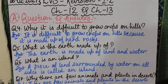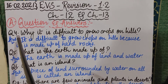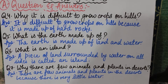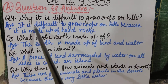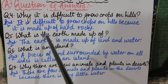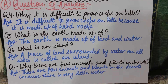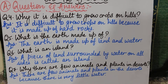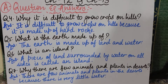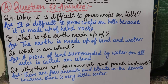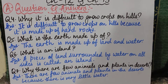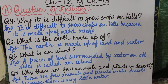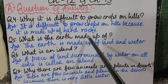Moving on to question number four: Why is it difficult to grow crops on hills? It is difficult to grow crops on hills because hills are made up of hard rocks and huge trees. That is why we cannot grow crops on hills. We grow crops on plains because the soil there is very fertile. For growing crops we need fertile soil, which is not available on hills.